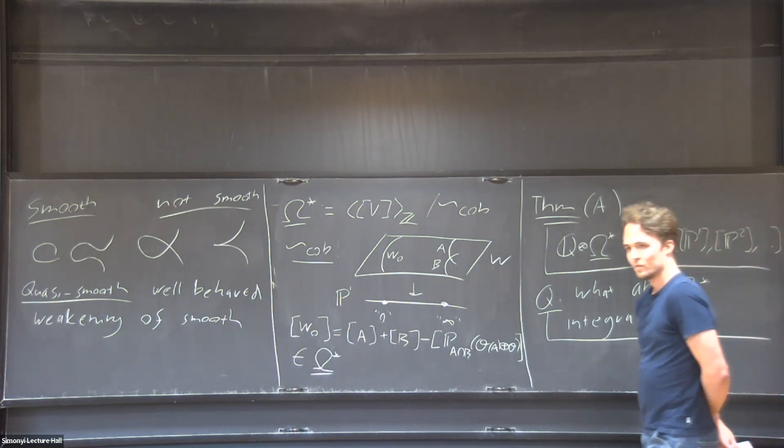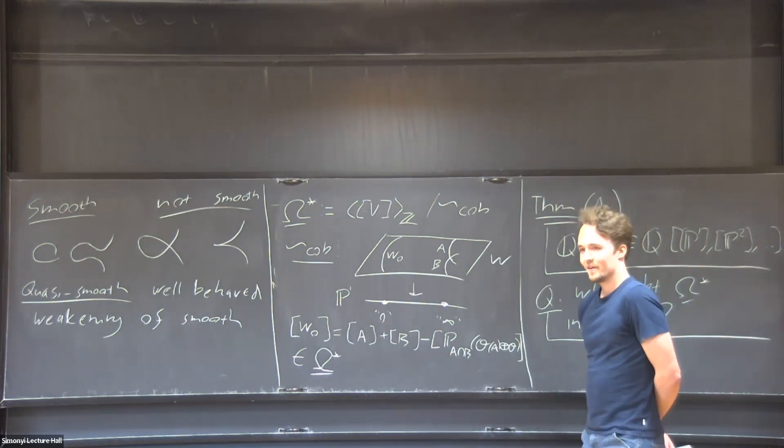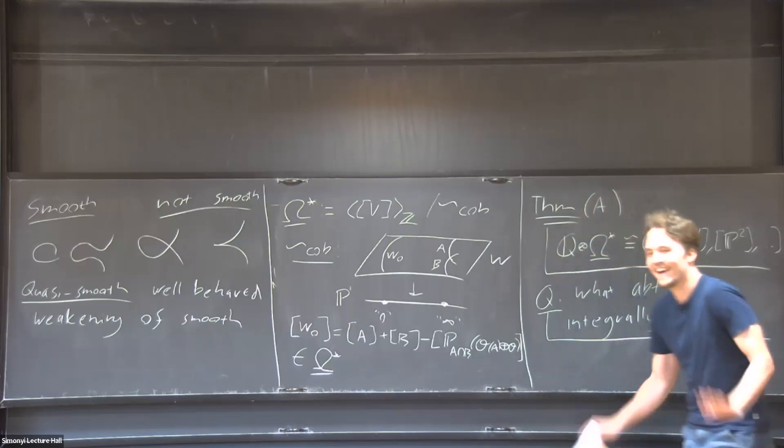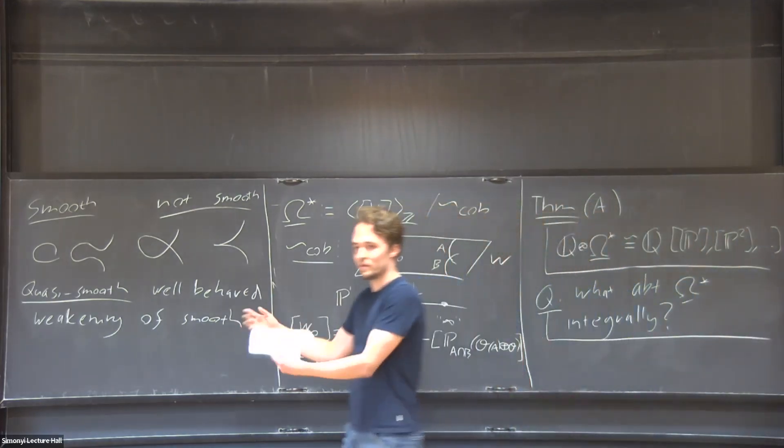What's the difference between regular and smooth? They are different. Regular is regular in the commutative algebra sense. Quasi-smooth just means that locally it embeds into a smooth thing as a derived regular embedding, meaning that locally it's the derived vanishing locus of the right number of equations. That's mostly what it usually is.